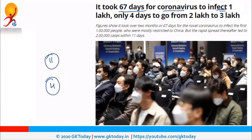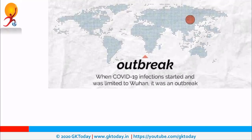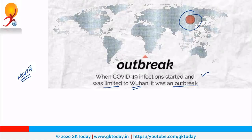First and foremost, what is an outbreak? News18 infographics has explained it very beautifully. Outbreak means when COVID-19 infections started and it was limited to Wuhan. So it was an outbreak — it was limited to a particular area only.